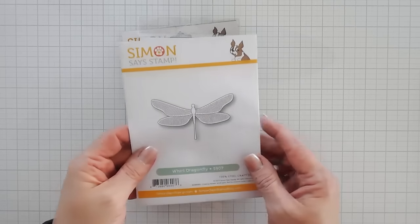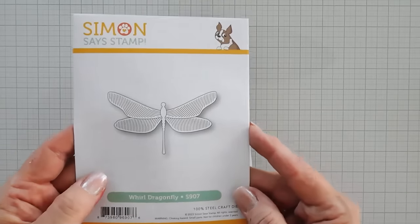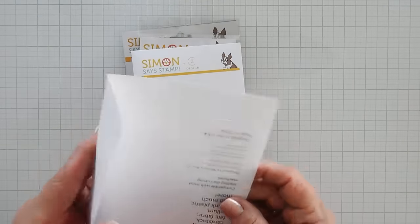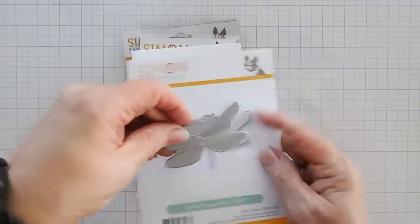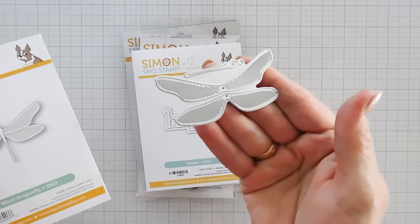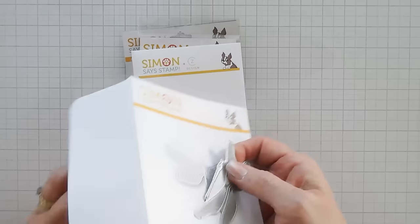We're going to be using the World Dragonfly. This is so pretty. Let me show you. It's a three-piece set. So you have both the wings and then you have the body. We'll be using this on our card today.